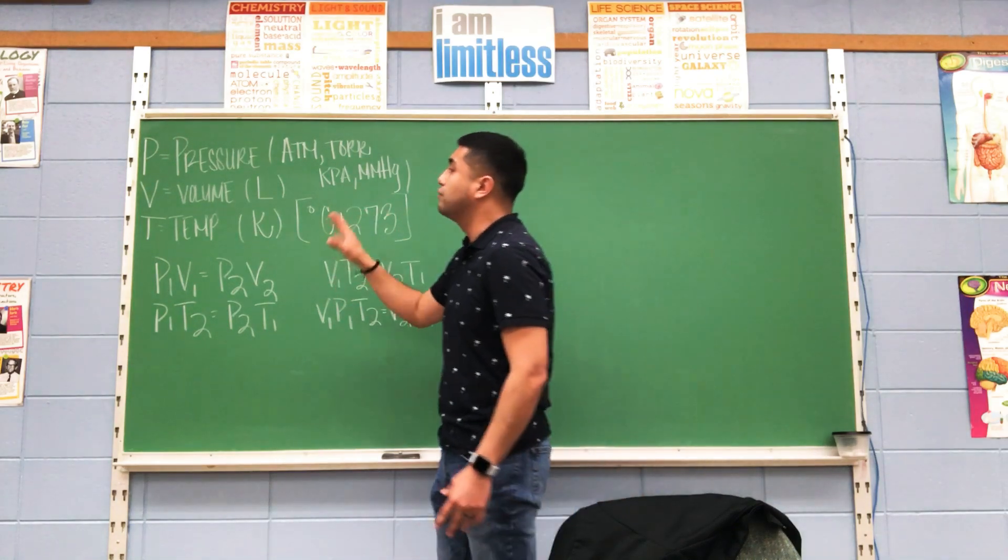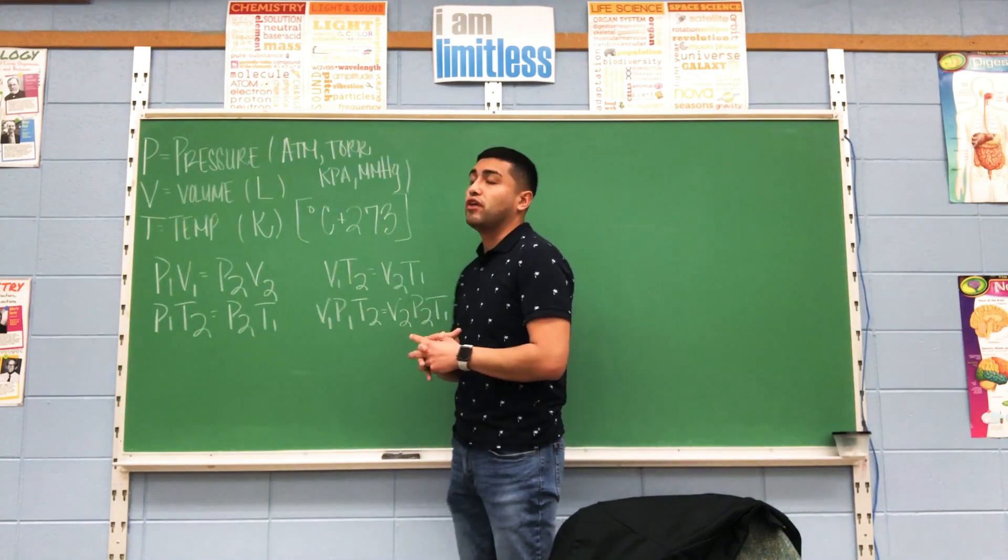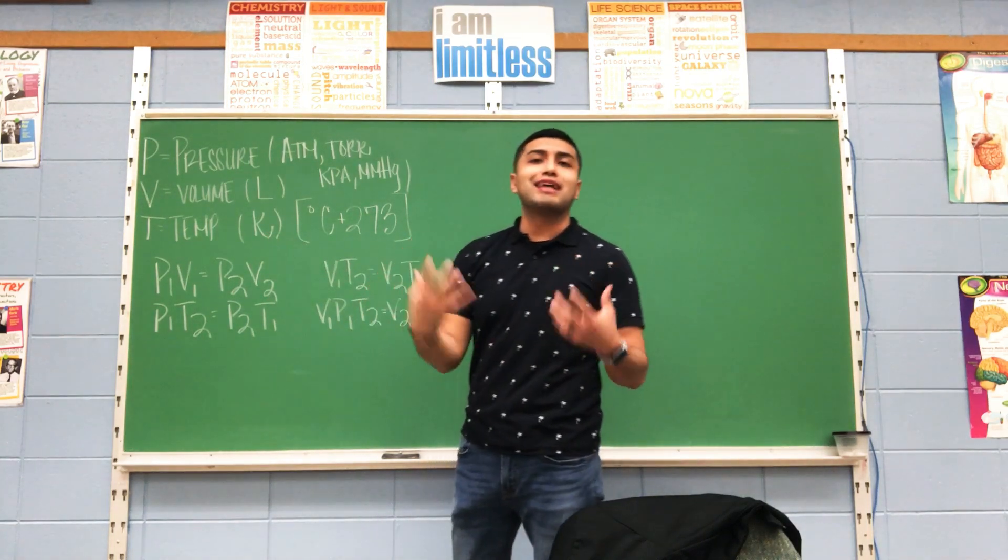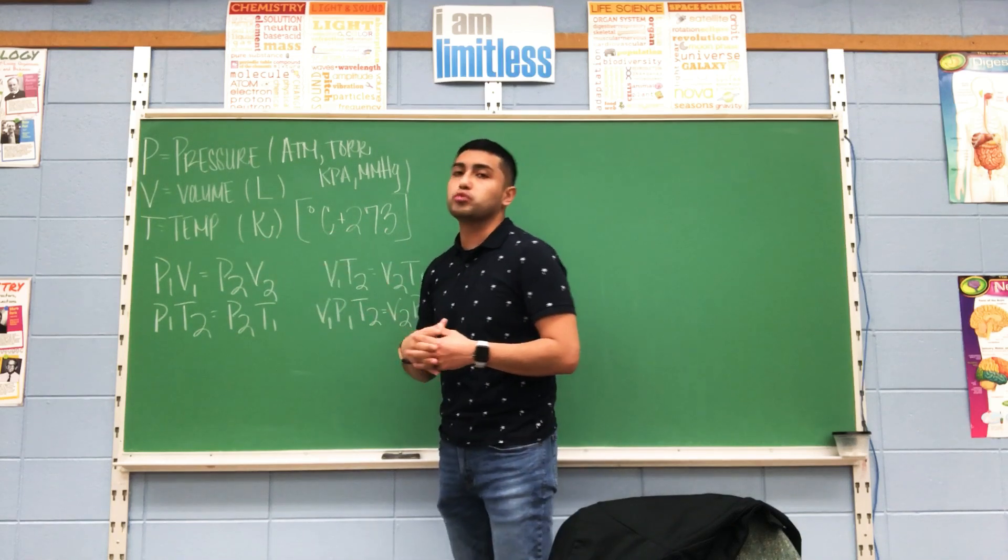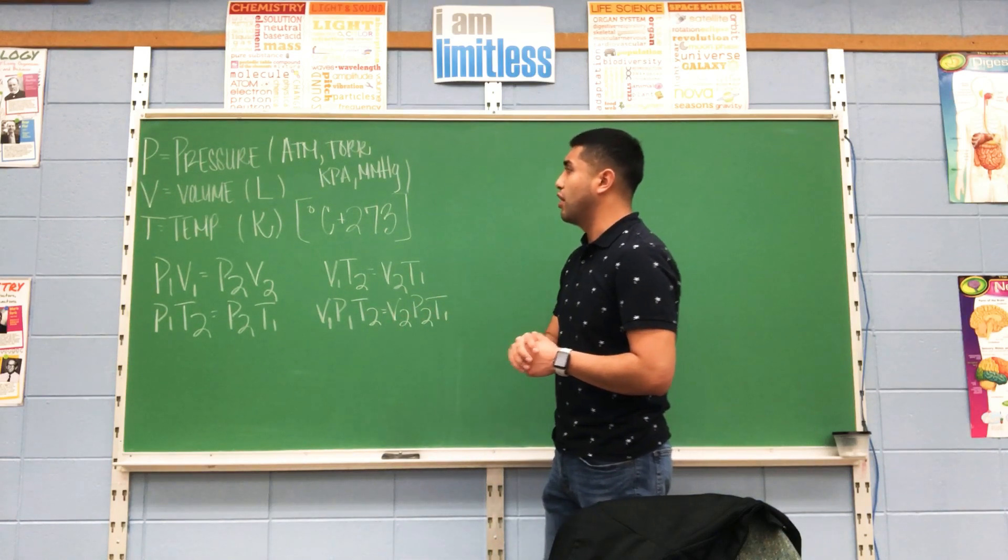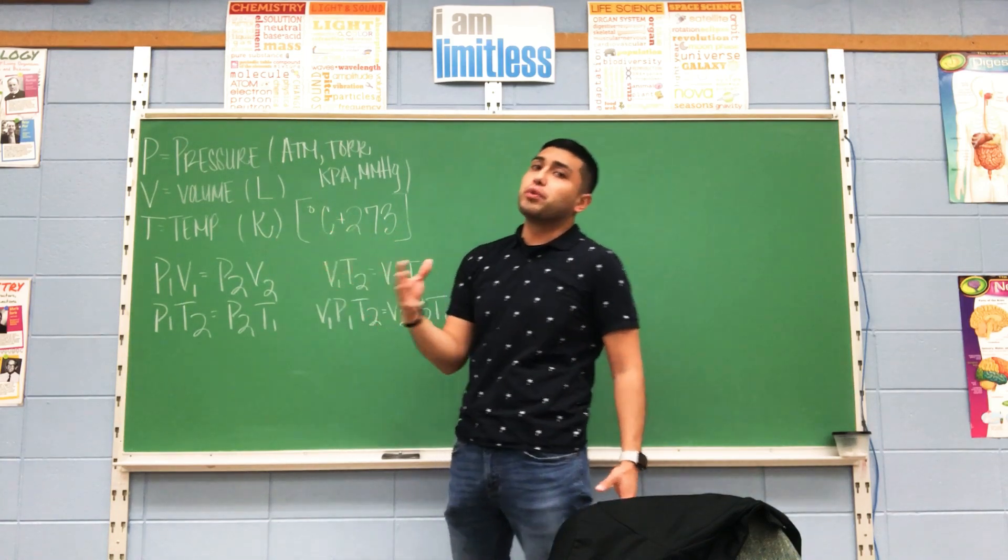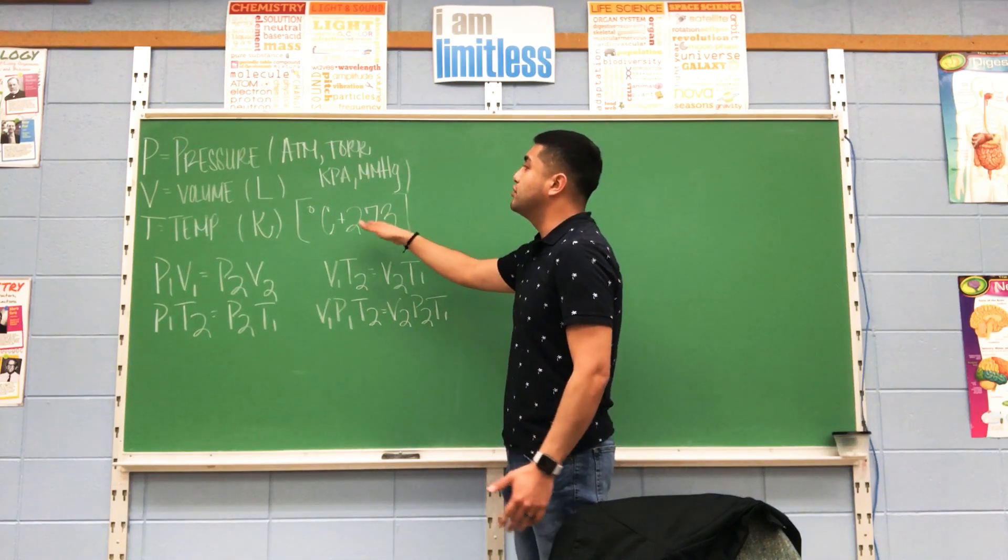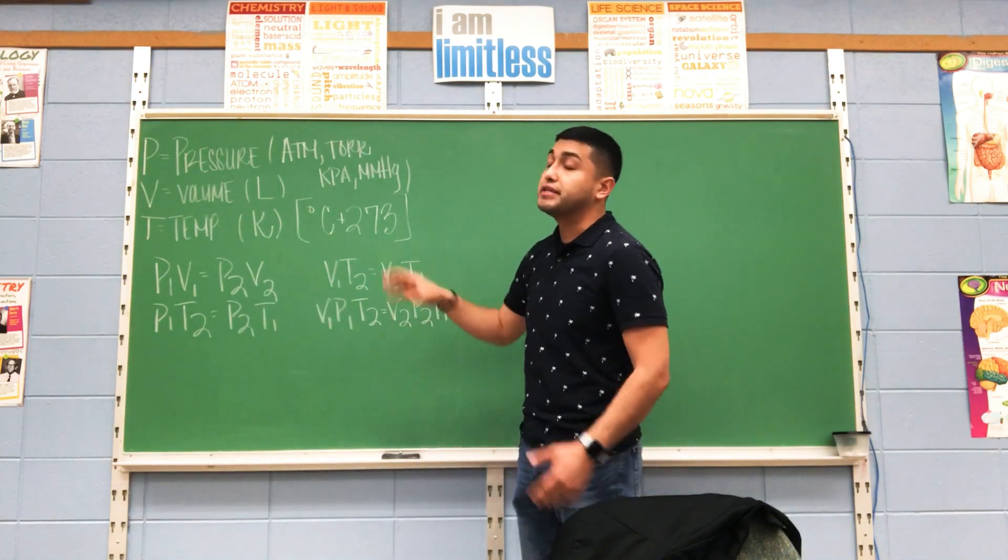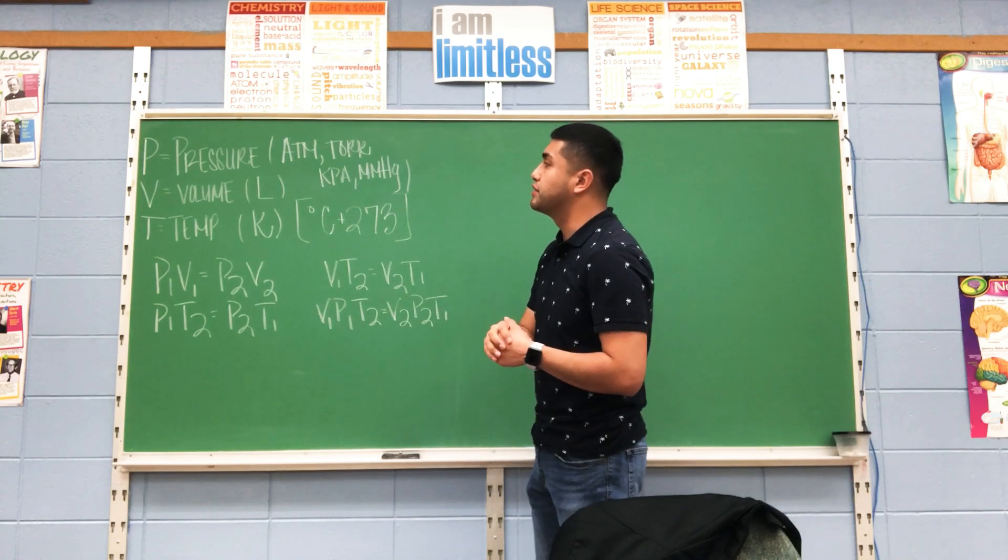Likewise, for temperature, you have to remember to convert. We have three different temperature scales: Fahrenheit, Celsius, and Kelvin. We use Fahrenheit and Celsius for our everyday lives, but in a laboratory or science class, you would use Kelvin, especially with gas laws. For example, if you have Celsius, you would add 273 in order to get your Kelvin. You always use Kelvin for your temperature scale when it comes to gas laws.